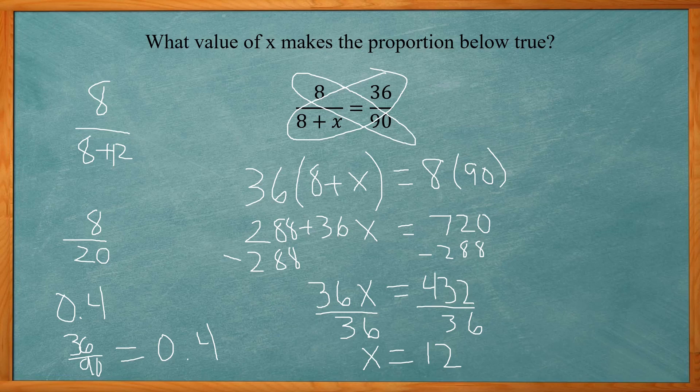So setting these equal to each other, both sides need to equal the same number. So we get 0.4 on the left and 0.4 on the right. So that means our answer is correct.